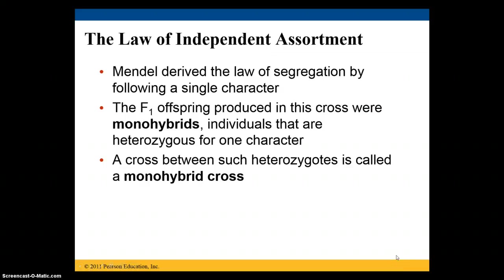Mendel was able to identify the law of independent assortment, meaning that chromosomes sort themselves independent of one another. He derived the law of segregation by following a single character. The F1 offspring were monohybrids — individuals that were heterozygous for only one character. That's where 'mono' comes from, and 'hybrid' comes from being heterozygous. A cross between two heterozygotes is called a monohybrid cross.